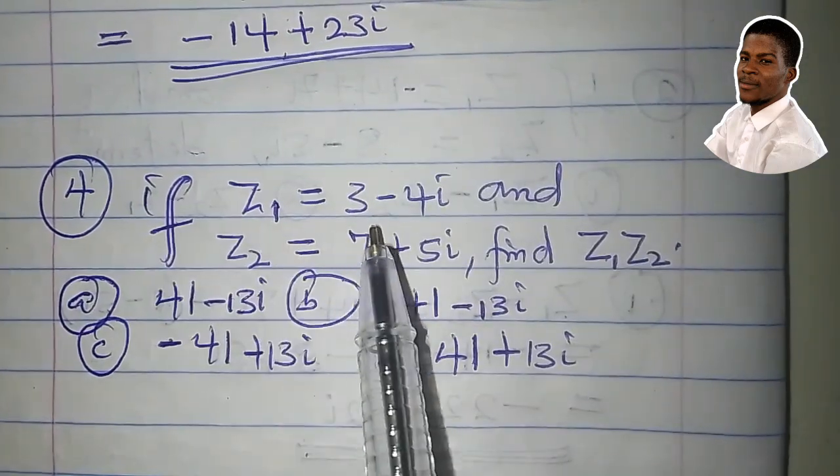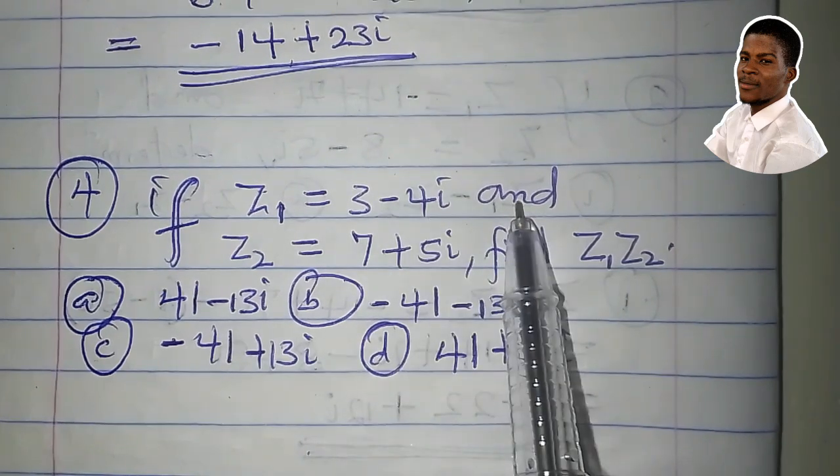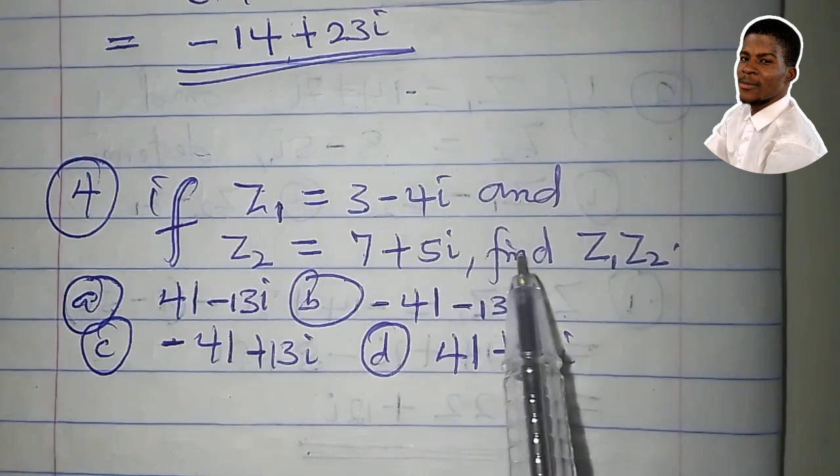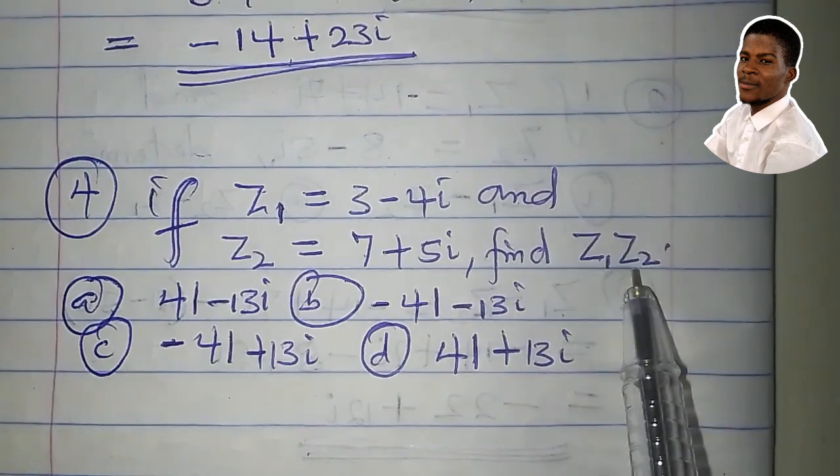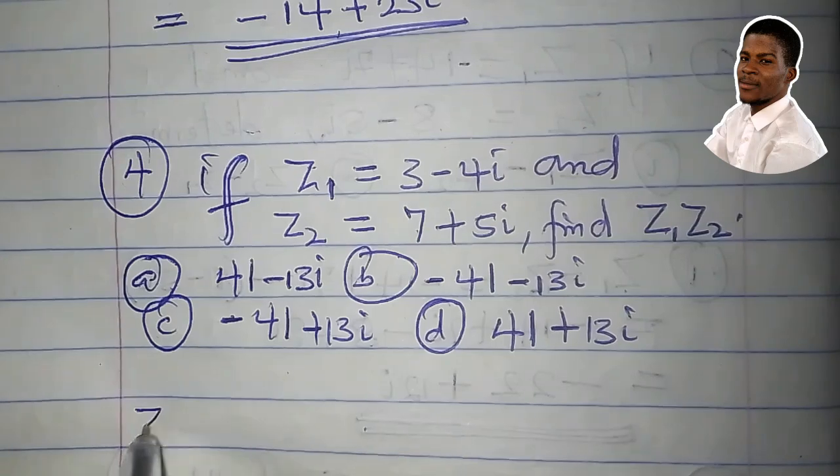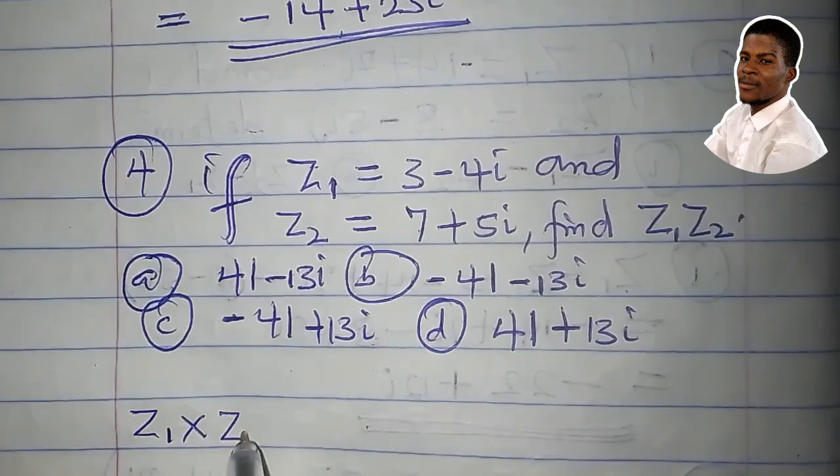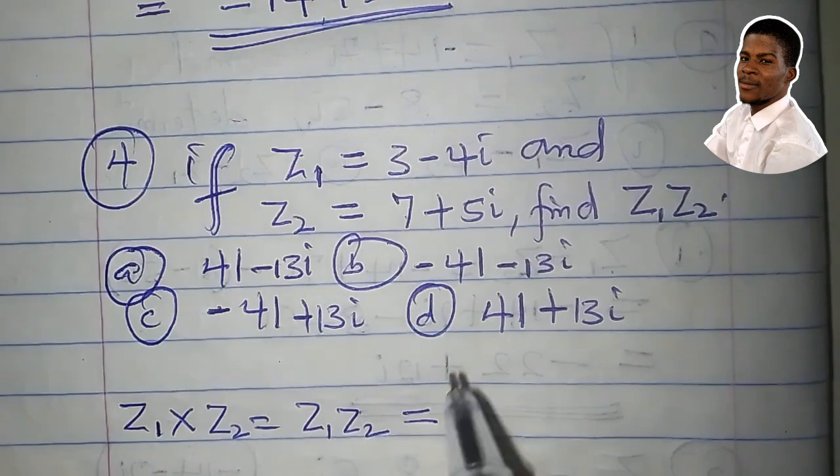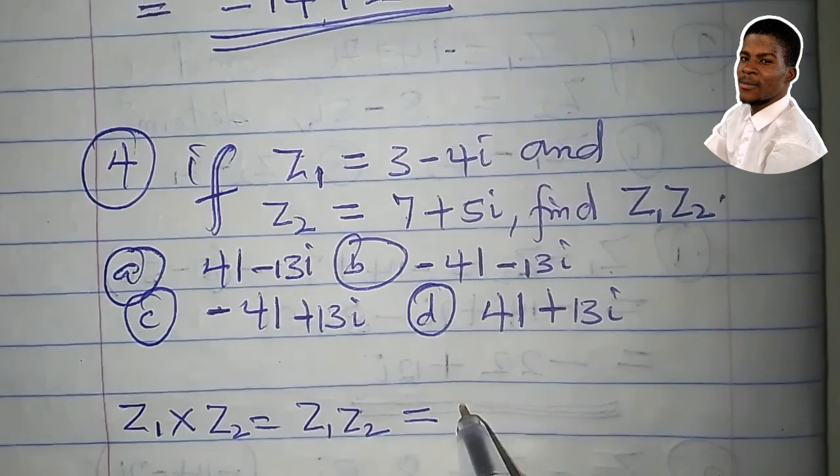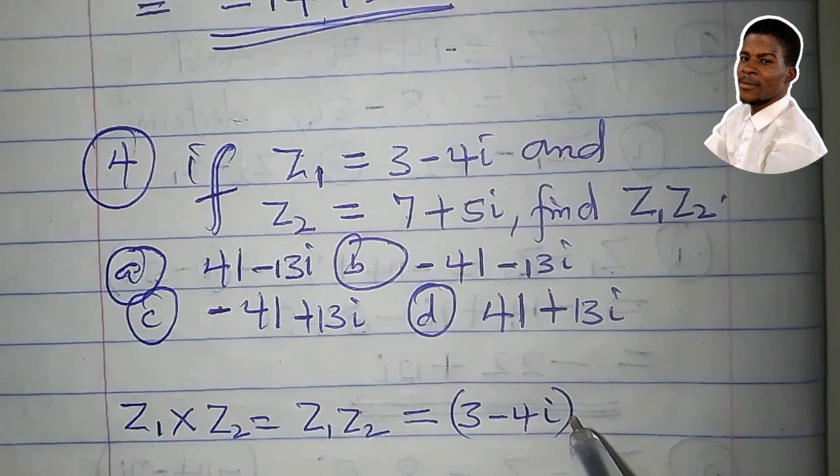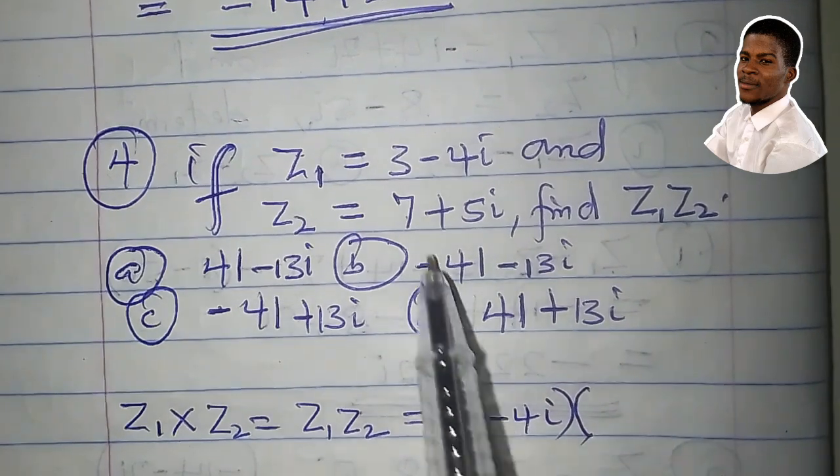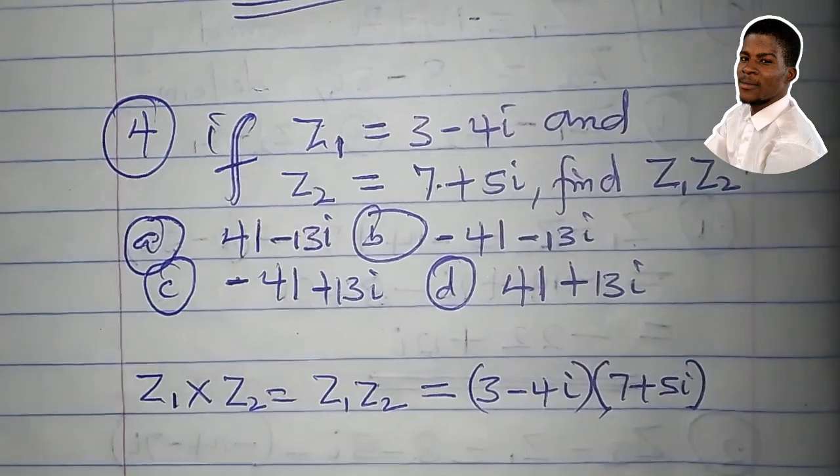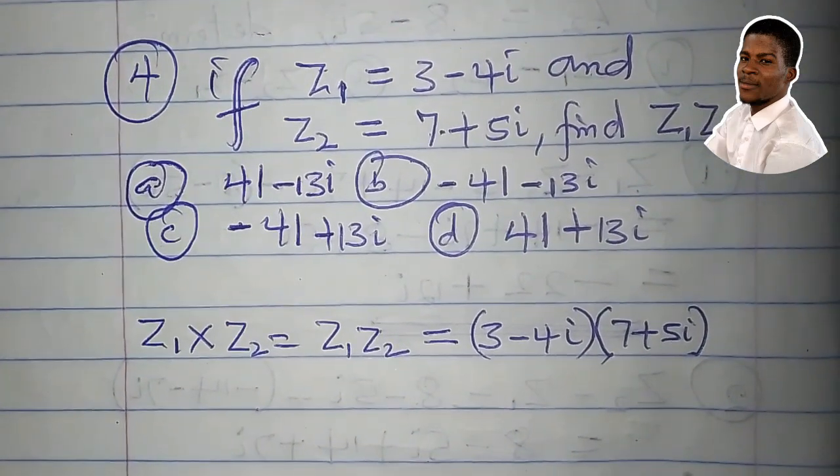If z1 is equal to 3 minus 4i and z2 is equal to 7 plus 5i, we have to find z1 times z2 and options are given. So z1 times z2 equals z1, which is 3 minus 4i, times z2, which is 7 plus 5i. Let's multiply and see which of the options is correct.